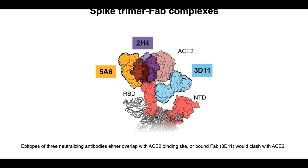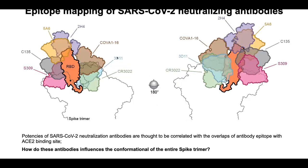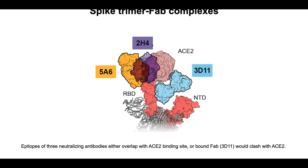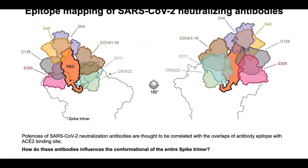This seems consistent with published literature showing that the closer the antibody epitope overlaps with ACE2 binding, the higher the potency. However, we also see certain instances where that notion breaks down. In our case, 2H4 actually has even more overlap with the ACE2 binding site than 5A6, yet 5A6 has higher potency. So this is the question we wanted to answer structurally — why?